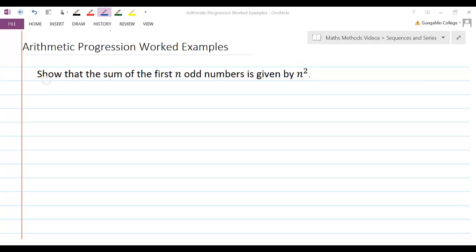So again this is another proof where we haven't clearly got an expression that we're working out. We're going to have to find an algebraic expression for the sum of the first n odd numbers and then show that that equals n squared.